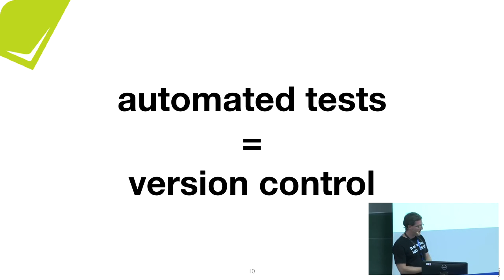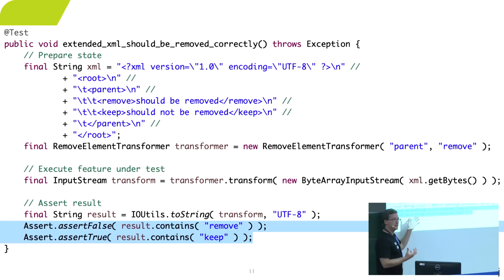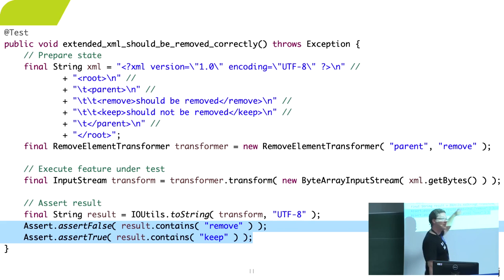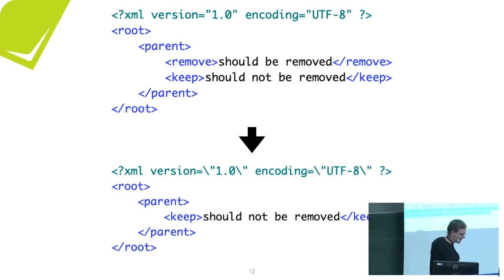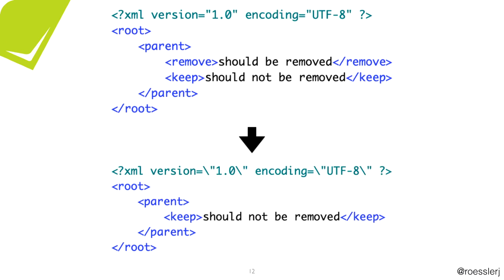Automated tests are really version control. Here's a typical unit test — an XML transformation test. You have an XML that goes in, a remove-element transformer that transforms it, and you want to make sure that the 'remove' tag is gone and the 'keep' tag is kept. You put in the XML, the test executes, and you get out the expected result — the keep tag is still there, the remove tag is removed. A fairly typical test.